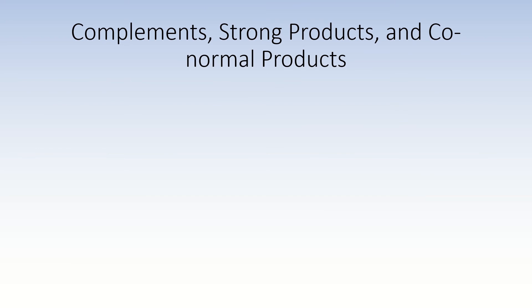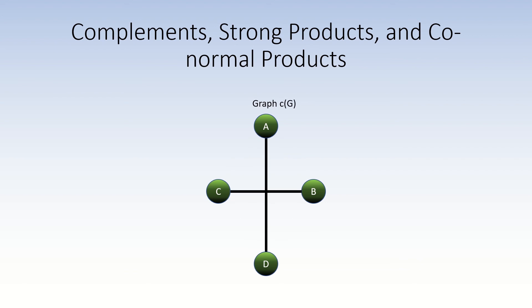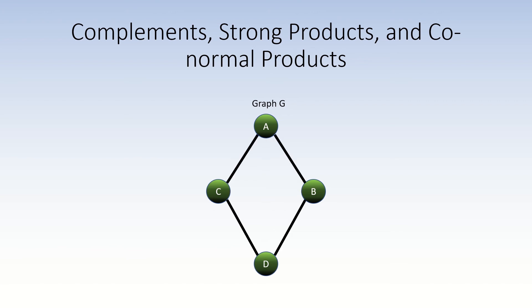The final property we examine is a surprising relationship between three graph operations: the complement, strong product, and conormal product of graphs. To recap, the complement of a graph G is a graph where every pair of adjacent vertices becomes non-adjacent, and every pair of distinct non-adjacent vertices becomes adjacent. The graph obtained by taking the complement of the conormal product of G and H is the very same graph as the strong product of the complement of G with the complement of H.